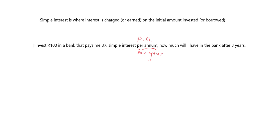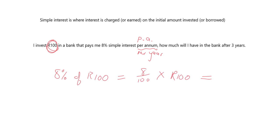With simple interest they pay you 8% on the initial amount that you invested. So 8% of that 100 rand they're going to pay you for every single year. 8% of 100 rand is 8 over 100 multiplied by 100 rand, which works out to 8 rand. So for every year that goes by they are going to give me 8 rand in interest — that's the amount of interest I get each year.